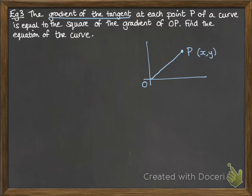So let's try to figure out what that question is telling us. So the gradient of the tangent, that's dy by dx, is equal to the square of the gradient of OP.